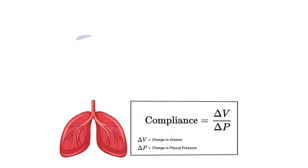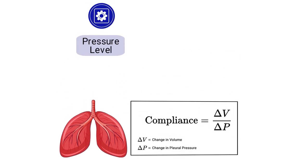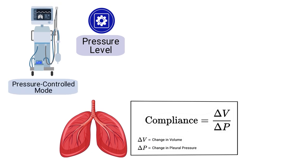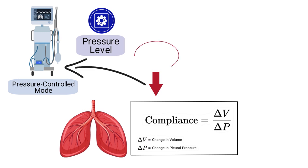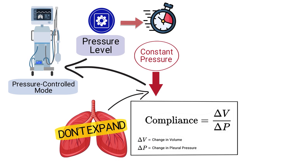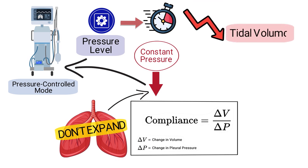You also needed to recognize that the pressure level is preset because the ventilator is in a pressure-controlled mode. If there is a decrease in lung compliance when the ventilator is operating in pressure control mode, the machine will continue delivering a constant pressure, but since the lungs don't expand as much with decreased compliance, it reaches the preset pressure limit much faster. This means there will be a decrease in the delivered tidal volume.